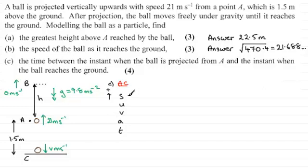And so S is the displacement. So when it goes from here up to B its displacement is H. It comes back down to A, it's zero. And then we carry on down to C and that displacement now is negative 1.5. So the displacement S is minus 1.5.